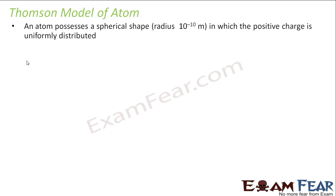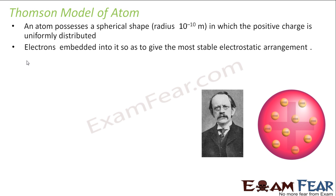Let us look at the Thomson model of atom. This model stated that an atom possesses a spherical shape in which the positive charge is uniformly distributed. Inside this sphere, positive charge is distributed uniformly everywhere. The electrons are embedded into it so as to give the most stable electrostatic configuration. As you can see in this figure, the pink colored sphere has positive charge distributed all over it — the entire sphere is a dense positive charge sphere — and the electrons are embedded in such a way that gives a stable arrangement.